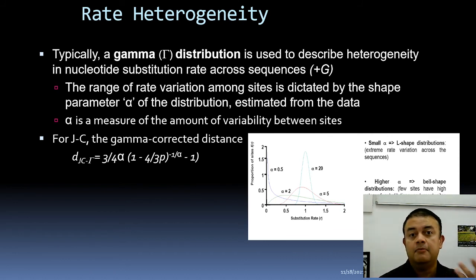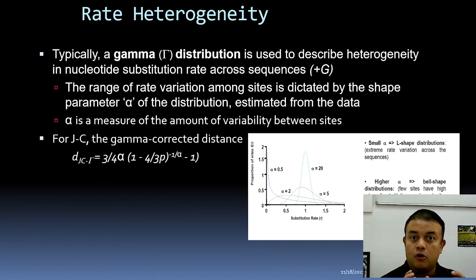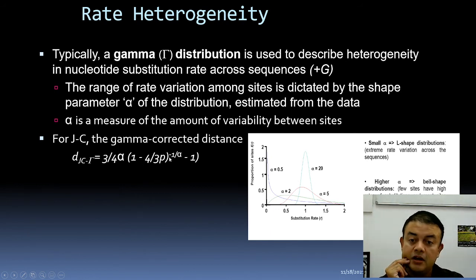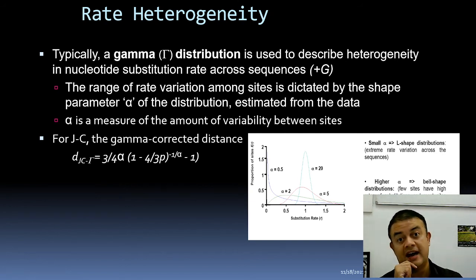The JC69 corrected with gamma is written as JC69+G: d = (3/4)α × [(1 − (4/3)p)^(−1/α) − 1]. This is the formula once you apply gamma correction in addition to the JC69 model. Every model can be modified by adding +G — so every model can have a +G variant.